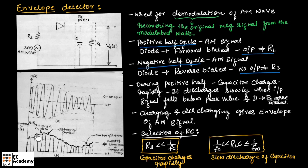This continuous process of charging and discharging of the capacitor gives the envelope of the AM signal. This envelope will be the same as the message signal — that's why this circuit is known as envelope detector.